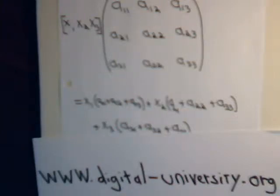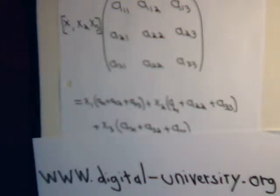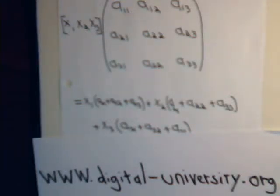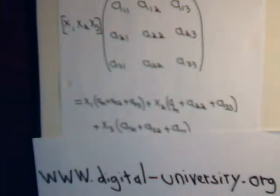In videos 7 and 7b, we talked about the mechanics of matrix multiplication. We still have a few more things to say on that subject, so we'll call this video 7b. In video 7 we defined matrix multiplication and went through the mechanics in some detail, and in video 7a we discussed different ways of approaching a matrix multiplication situation. Here in video 7b we're going to try to wrap this up. The playlist for all the videos is at the website digital-university.org.